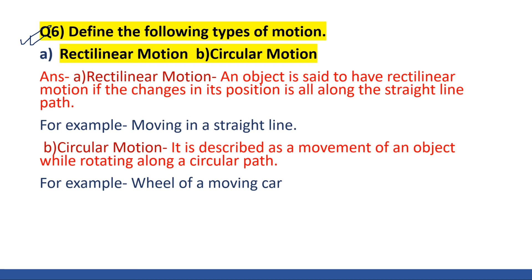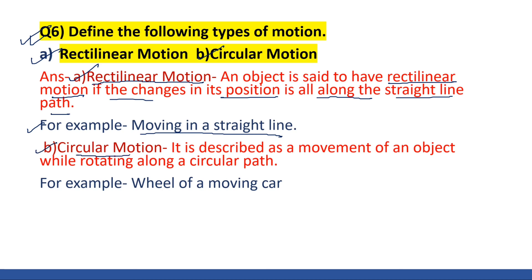Question number six: define rectilinear motion and circular motion. Point A — rectilinear motion: an object is said to have rectilinear motion if the change in its position is all along a straight line path. Example: moving in a straight line. Point B — circular motion: it is described as a movement of an object while rotating along a circular path. Example: the wheel of a moving cart.